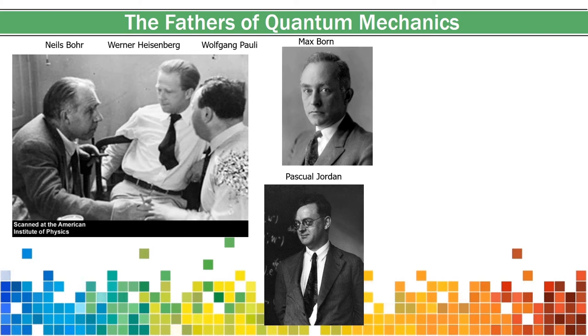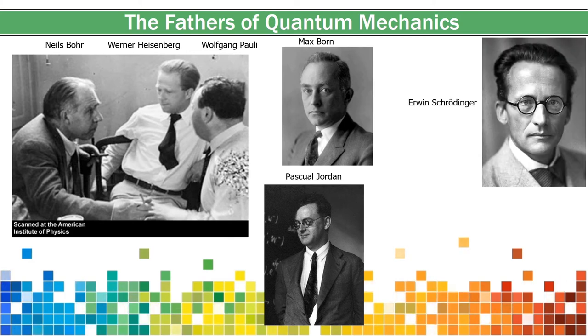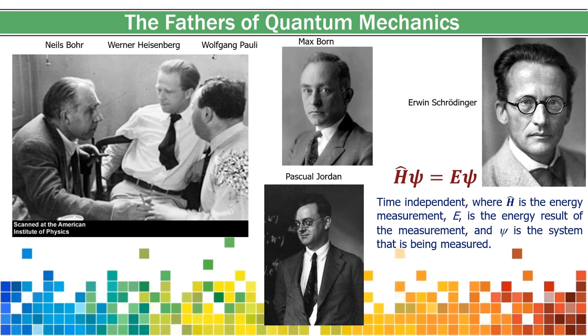In that same year, Erwin Schrödinger, building upon the particle wave nature of matter of de Broglie, derived what is now called the wave equation, H psi equals E psi. This famous version of this equation is a simplified time-independent version, where the H is called the Hamiltonian operator, and mathematical operators have hats on them, and H represents an energy measurement. E is the energy result of the measurement, and the Greek letter psi is the system that is being measured, in this case, the stationary state at the atomic level.